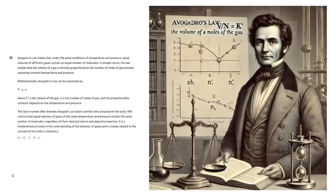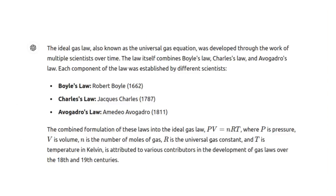Then in 1811 the third part of the ideal gas law was introduced. It basically stated that if you add more gas molecules you expand the volume, and vice versa. This law is intuitively obvious — if you increase the number of molecules they're going to take up more space. When we put those three laws together we get the ideal gas law: pressure times volume equals the number of molecules times a constant times the temperature. The ideal gas law allows us to calculate the temperature of a gas if we know the pressure, volume, and number of molecules.